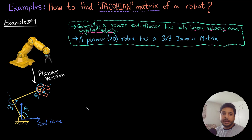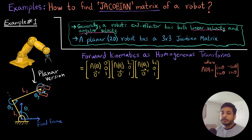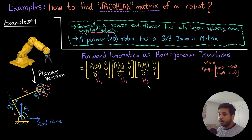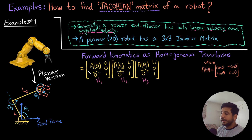The way we find the Jacobian is we first start by doing the forward kinematics as homogeneous transforms. I have made these three homogeneous transforms — let me label them as H1, H2, and H3. Here, A(theta) is just a 2x2 orientation matrix, or rotation matrix, which is this one. I am hoping by this point you are all comfortable with how to write these homogeneous transforms — if not, you can always go back to my previous videos.